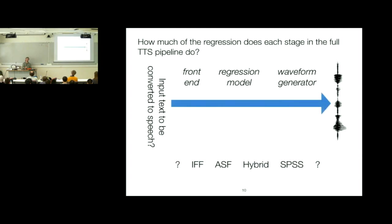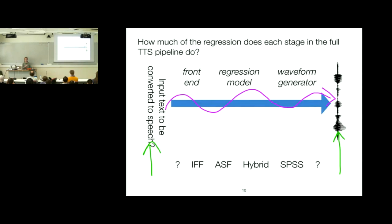So we've got this journey from text to speech: input text goes in, output speech comes out, and we've got this rather long and complicated journey to get there. We're going to do that with a sequence of techniques. Exactly how many there are in the pipeline and where their responsibilities fall varies a little bit with different systems.